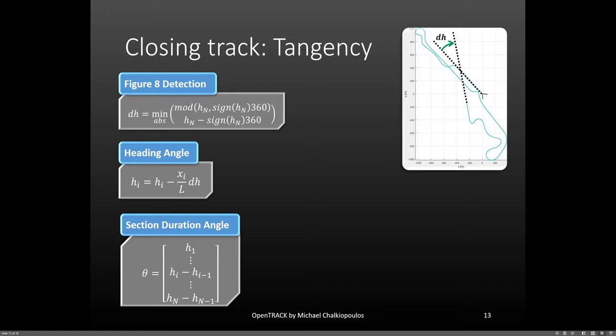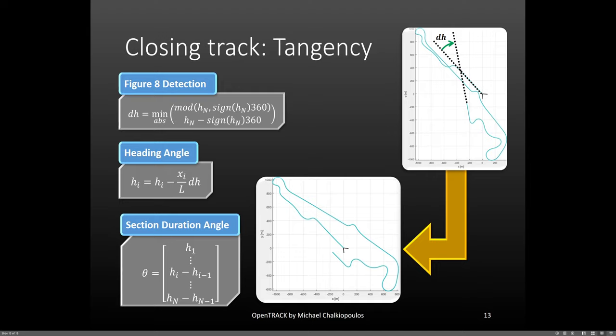If you look at the equation, you can see that there is no modification for the first point, because x is equal to zero, and the last point receives all the modification to become tangent as x equals L and x divided by L is equal to one. Then, we can recalculate the circular segment angles. With these new angles now known, we can recalculate the map and stage one is complete.